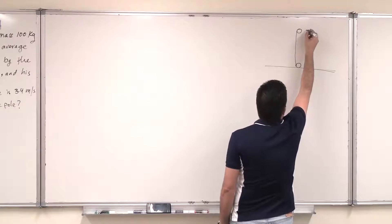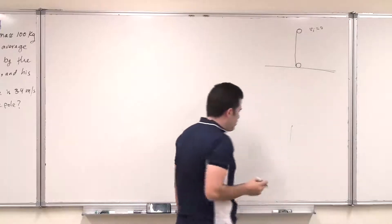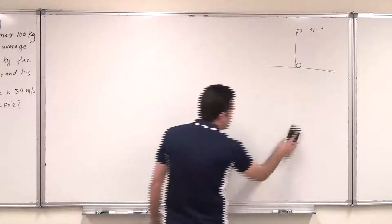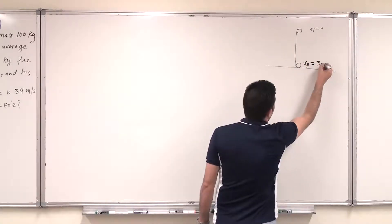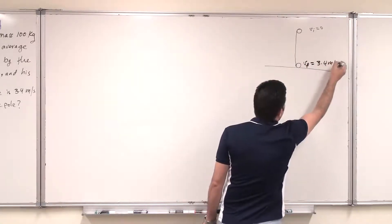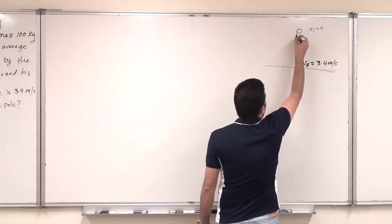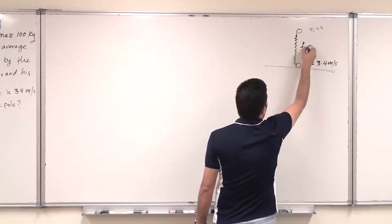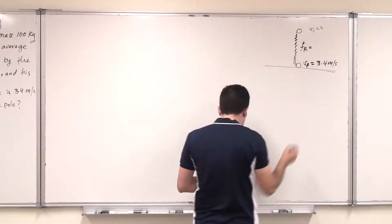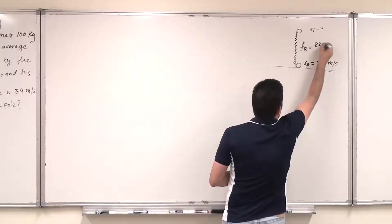Now the initial velocity at the starting point is given as 0 because the question reads starting from rest. And then the final velocity here is given as 3.4 meters per second. Clearly, as he slides down, there is friction. And the force of the friction is given on average as 820 newtons.